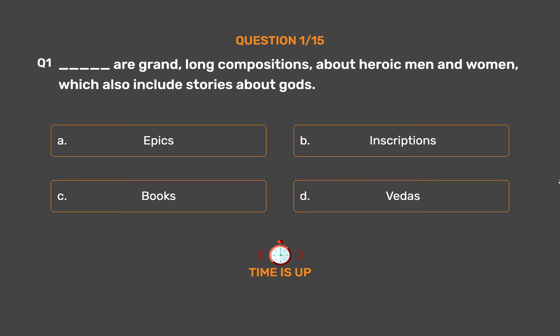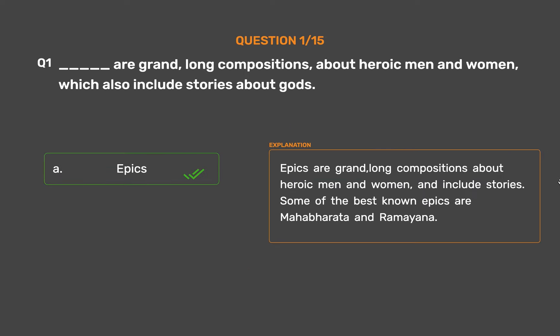The correct answer is Option A: Epics. Epics are grand, long compositions about heroic men and women, and include stories. Some of the best-known epics are the Mahabharata and Ramayana.